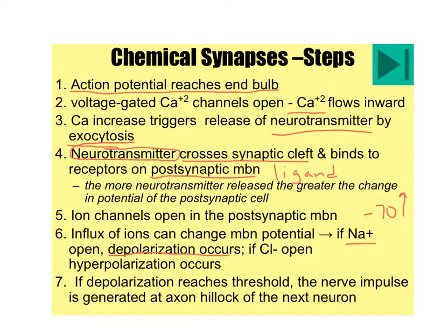If it's an inhibitory neurotransmitter, it can actually make the neuron hyperpolarized — even more negative than negative 70 millivolts. That occurs because chloride channels open, allowing chloride to flow in, or potassium channels open, allowing potassium to flow out. Either way, it makes the neuron more negative on the inside, making it less likely that an action potential will occur. If depolarization does reach the threshold of negative 55 millivolts at the axon hillock, then the postsynaptic neuron will fire an action potential.